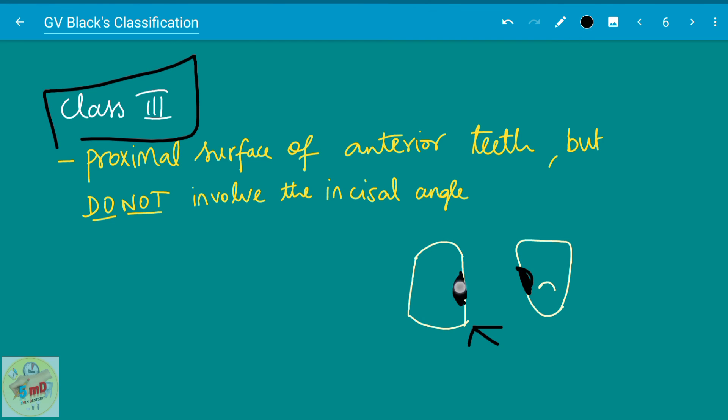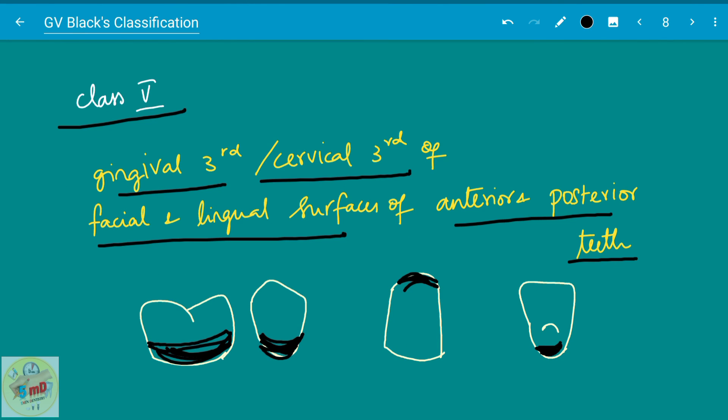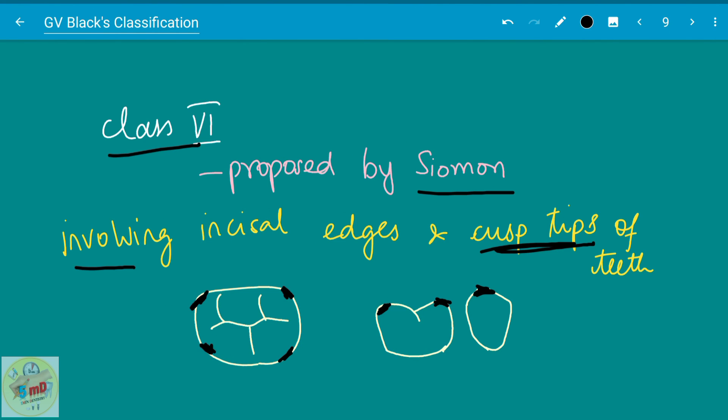Class three is proximal surface of the anterior teeth, but do not involve the incisal angle. If it involves the incisal angle, then it is class four. In class five we have gingival third or cervical third of the facial and lingual surfaces. Caries or cavity in this lesion is called class five. Class six was proposed by Simon, it involves the incisal edges and the cusp tip of the teeth. So I hope you got an idea. See you soon in the next video.